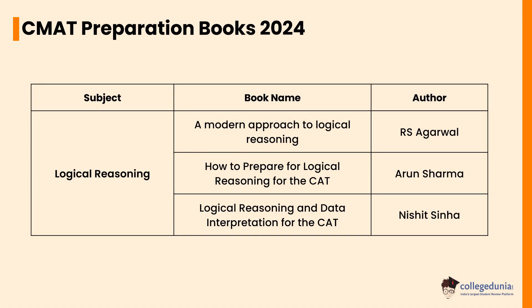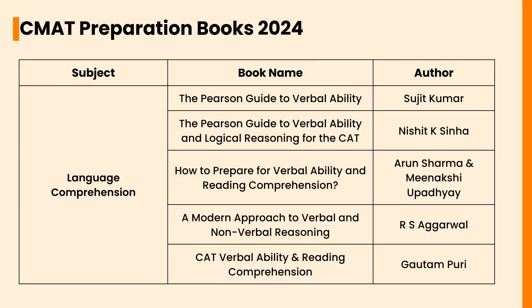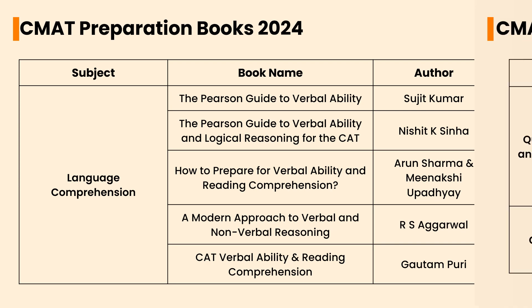Let's check the CMAT preparation books 2024. For Logical Reasoning: A Modern Approach to Logical Reasoning by R.S. Aggarwal, How to Prepare for Logical Reasoning for the CAT by Arun Sharma, and Logical Reasoning and Data Interpretation for the CAT by Nishit K. Sinha. For Language Comprehension: The Pearson Guide to Verbal Ability by Sujit Kumar, The Pearson Guide to Verbal Ability and Logical Reasoning for the CAT by Nishit K. Sinha, How to Prepare for Verbal Ability and Reading Comprehension by Arun Sharma and Meenakshi Upadhyay, A Modern Approach to Verbal and Non-Verbal Reasoning by R.S. Aggarwal, and Verbal Ability and Reading Comprehension by Gautam Puri.